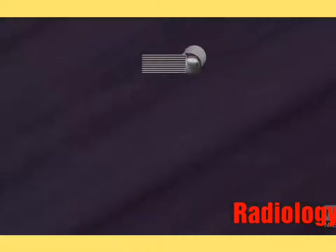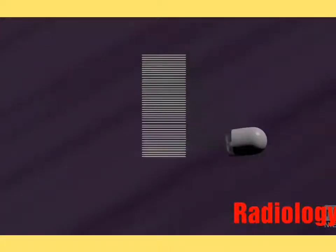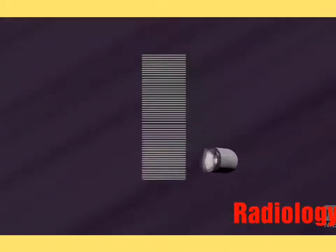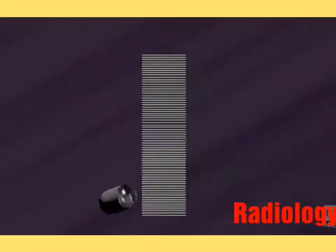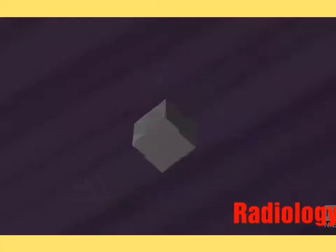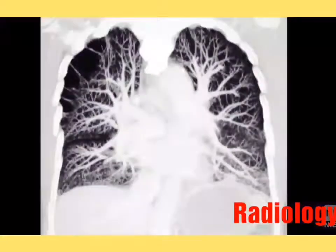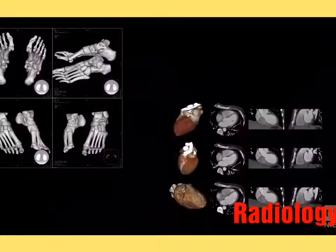A CT scan is an X-ray procedure that creates cross-sectional images with the help of computer processing. CT images are more detailed than conventional X-ray images and can reveal bones as well as soft tissue and organs.